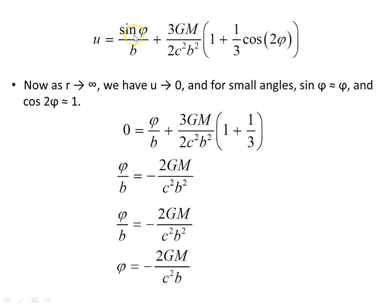Setting U = 0 and applying the small-angle approximations: the cos(2φ) ≈ 1 gives a factor of one-third times one. We then get φ/B plus the perturbation terms equal to zero. Solving: the factors combine to give 4/3 divided appropriately, and the threes cancel, leaving 2GM/c²B². Taking that term to the other side, φ/B = −2GM/(c²B²), and multiplying through by B gives φ = −2GM/(c²B).